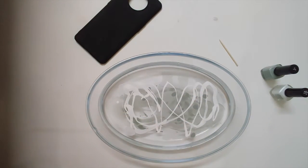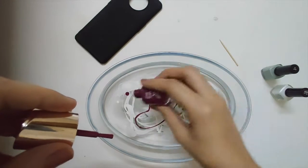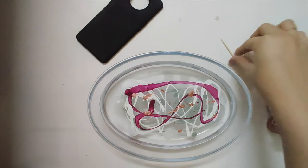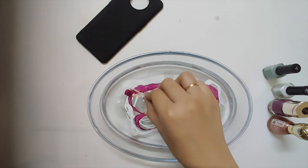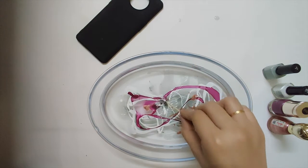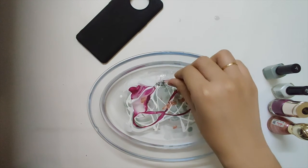Then we take the toothpick and make swirls in the pattern. But I kind of messed it up because one of the nail paints that I used was really sticky, so make sure you use very runny nail paints.